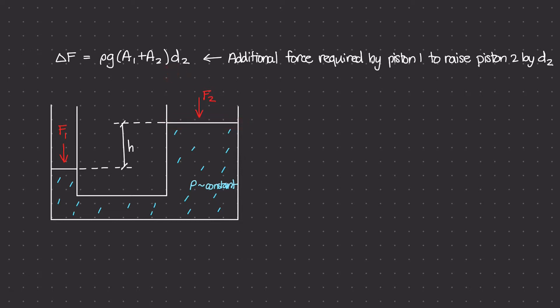So what is the additional force required to be able to push piston 1 down so that we can raise piston 2 by some amount D2. And that is D2 right there. So we want to be able to raise this car by some amount D2.